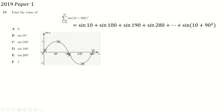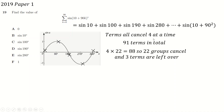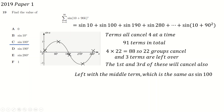There are 91 terms in this sum because we start counting at zero. They cancel four at a time: 4 × 22 = 88 terms cancel, leaving 3 terms remaining. Because the pattern repeats every four, those last three terms correspond to sine 10, sine 100, and sine 190. Sine 10 and sine 190 cancel, leaving sine 100 as the answer. This question is really about three things: keeping a cool head, drawing a sketch, and figuring out what you can from the structure.